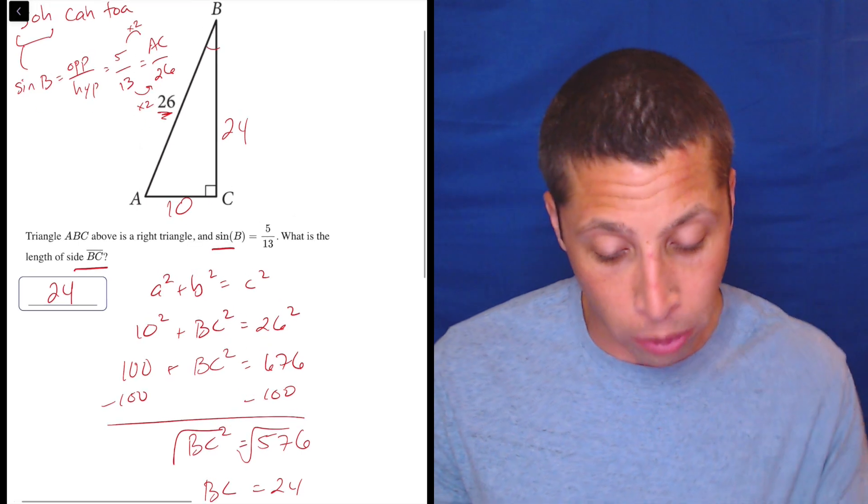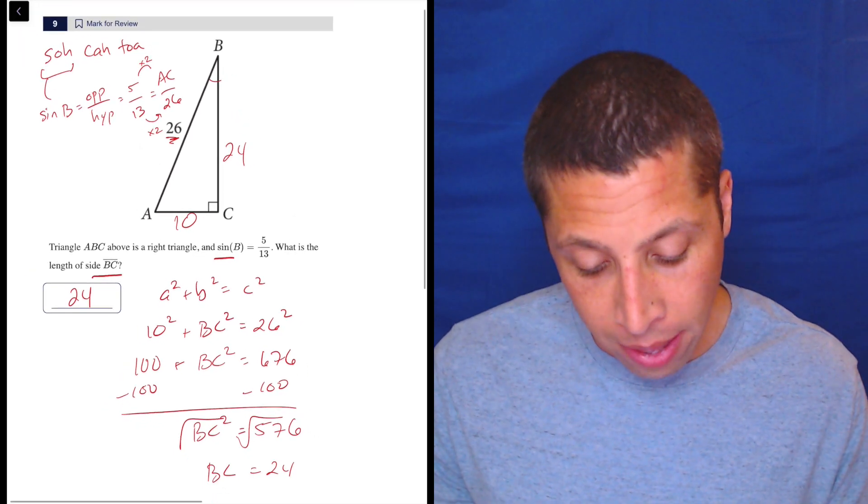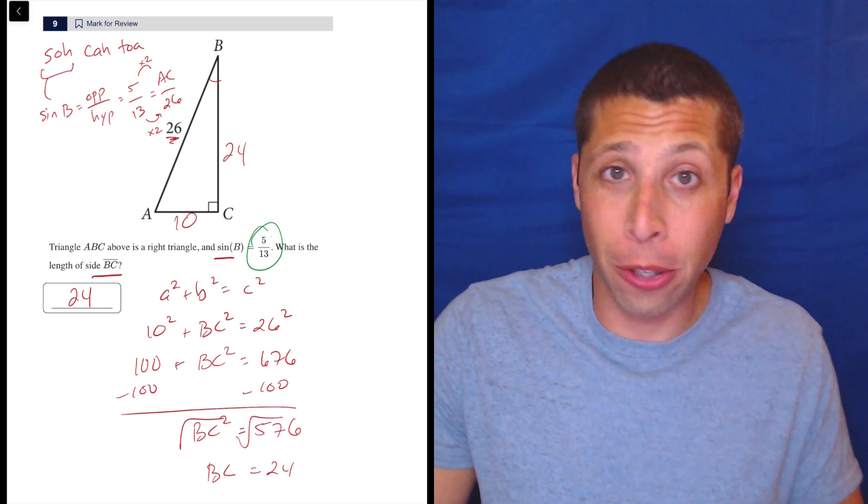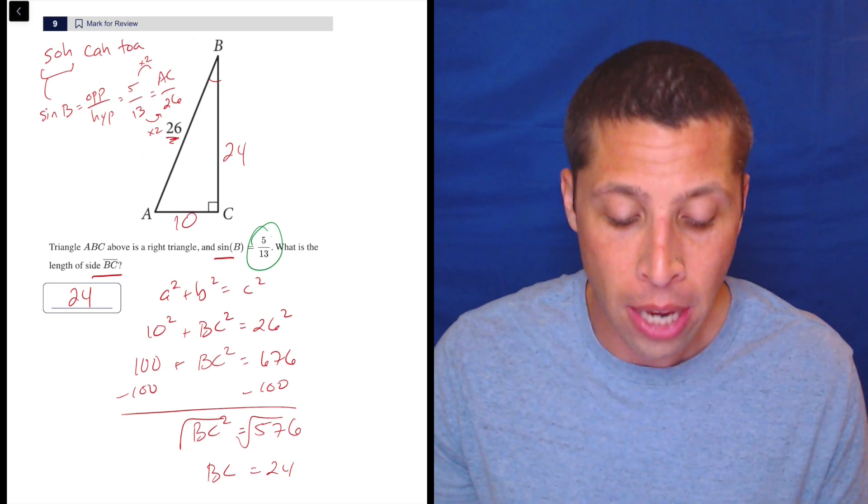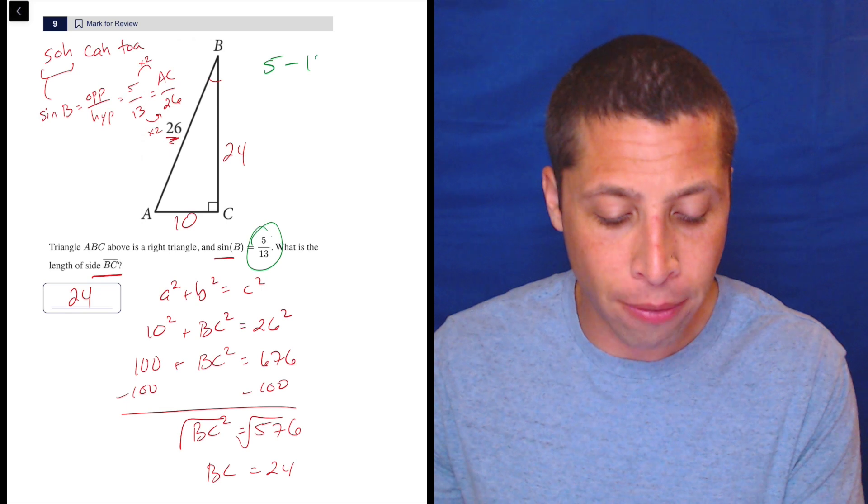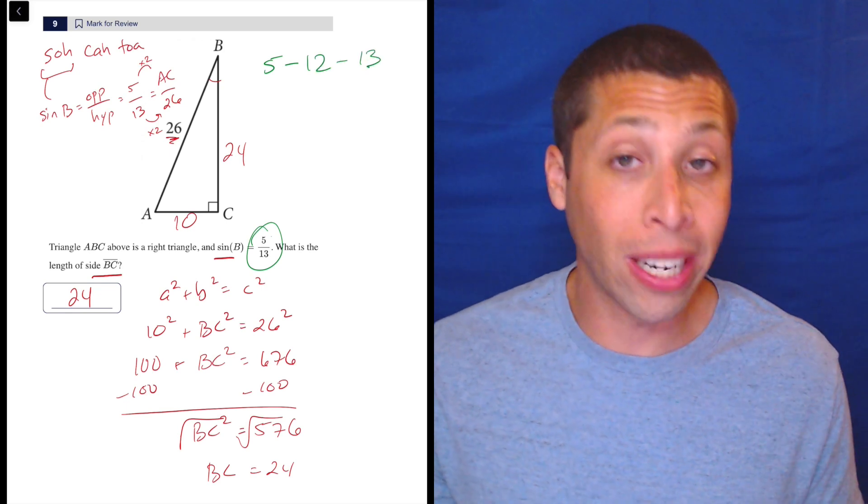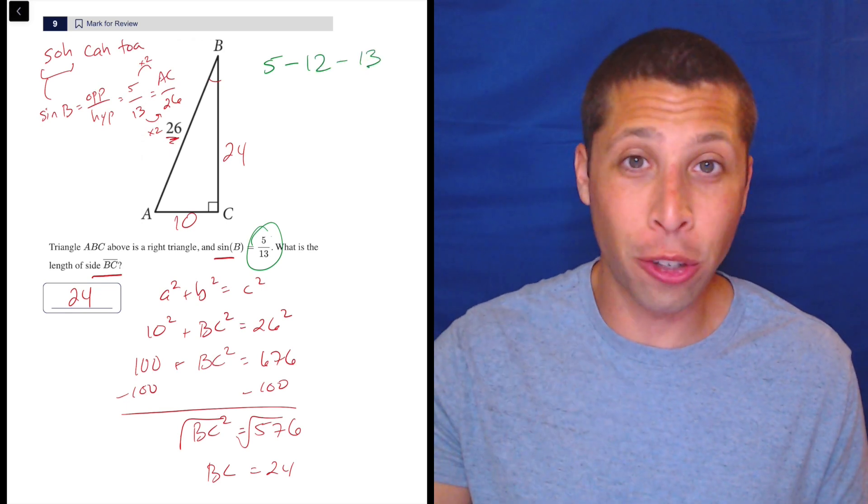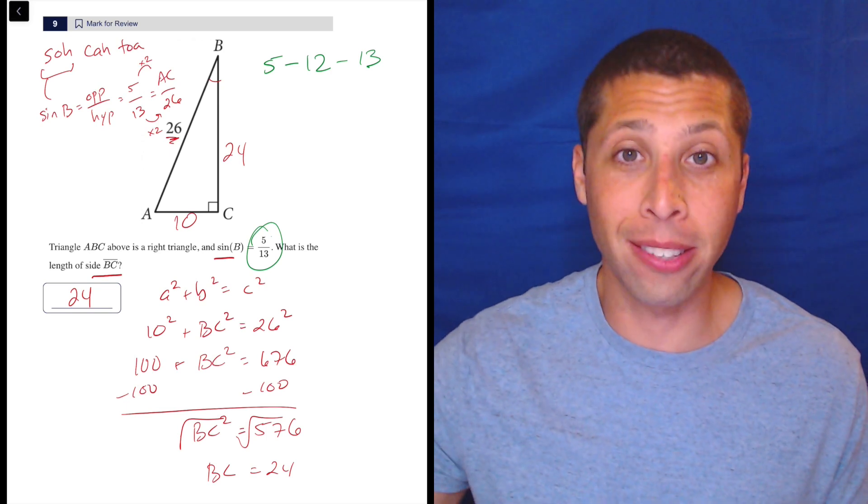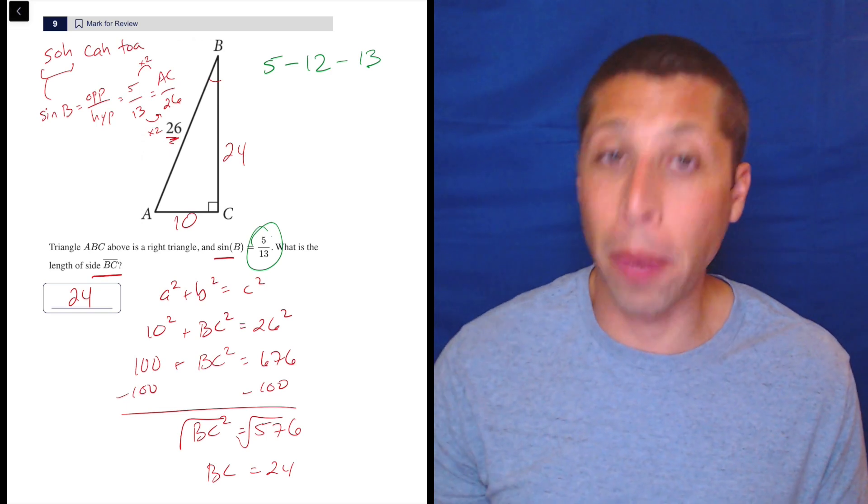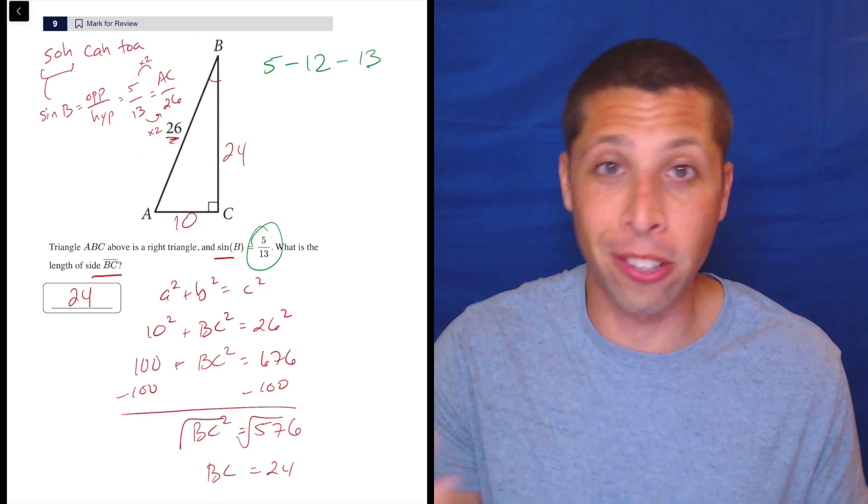Now, the reason some of us would have been able to do a shortcut is we recognize that 5 and 13 are not a coincidental set of numbers for trigonometry and for triangles. It is part of a Pythagorean triple, known as a 5, 12, 13 right triangle. Those are just some integers that happen to work out really nicely for Pythagorean theorem and right triangles. They're going to show up in a lot of problems involving those things because they just work out nice.